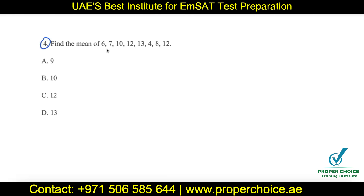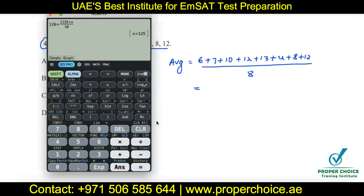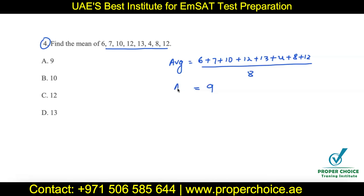The last question asks us to find the mean of a set of numbers — mean is the average. Average equals sum of numbers divided by total count. Adding: 6 plus 7 plus 10 plus 12 plus 13 plus 4 plus 8 plus 12, divided by 8 numbers. Entering this in the calculator gives 9. The mean value of the given data is 9 — option A.